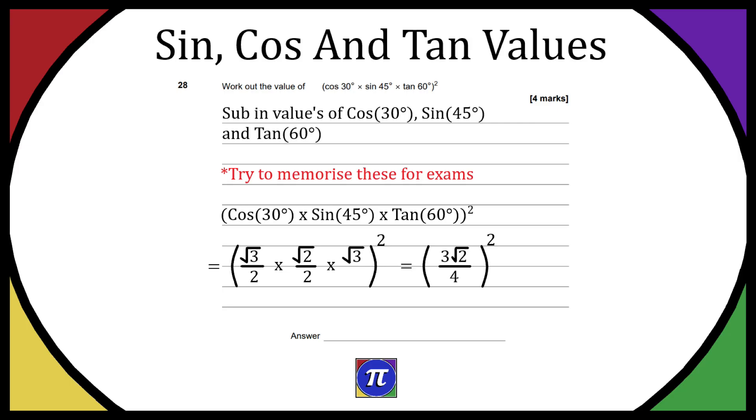Now we can simplify that to 3 times the square root of 2 over 4. On the bottom, 2 times 2 is 4, and on the top, square root of 3 times square root of 3 is 3. And then that's going to be 3 times the square root of 2 all squared still.